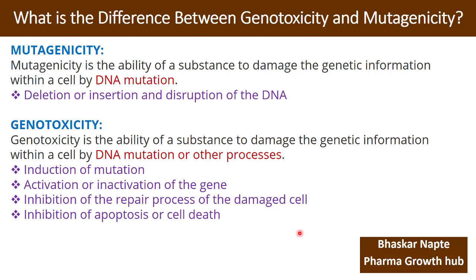Inhibition of apoptosis — the process of cell death — is also part of genotoxicity. Cell death is a very natural process; new cells are created and old cells die. But if a substance inhibits this natural cell death, that is quite unnatural, and you can say that substance is a genotoxic substance.